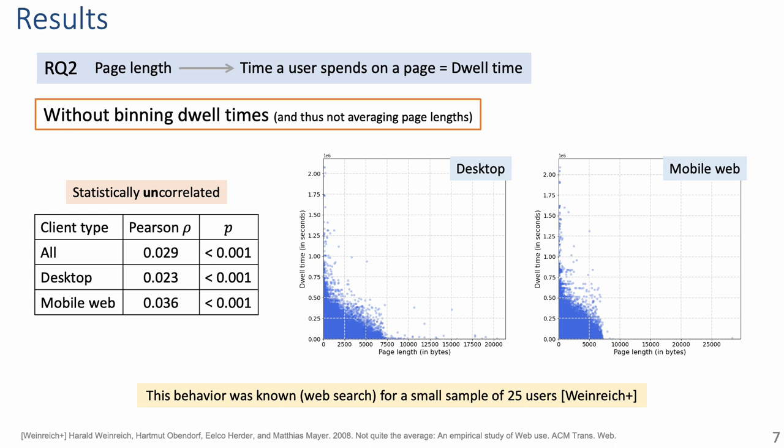To further confirm this, we did two things. First, we plotted the data without binning dwell times, and thus no averaging page length, as you can see in the scatter plots shown on the right section of the slide. We also computed the Pearson correlation coefficients, which, as you can see on the table, confirmed the uncorrelation between the variables. This behavior was known in the context of generic web search for a small sample of 25 users, but in this work we use logs containing millions of sessions, greatly expanding this sample size.